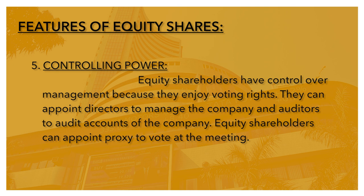Number 5: Controlling Power. Equity shareholders have control over management because they enjoy voting rights. They can appoint directors to manage the company and auditors to audit accounts of the company. Equity shareholders can also appoint a proxy to vote at the meeting. इसलिए वह company की management पे control कर सकते हैं। अगर equity shareholders meeting में नहीं जा पाते, तो वह अपने बदले किसी और को भेज कर अपना vote दे सकते हैं।